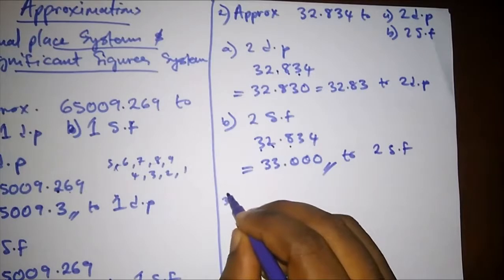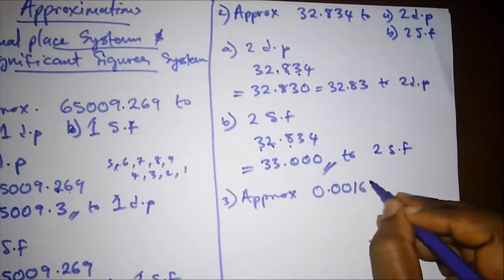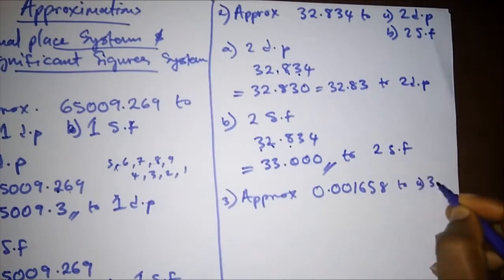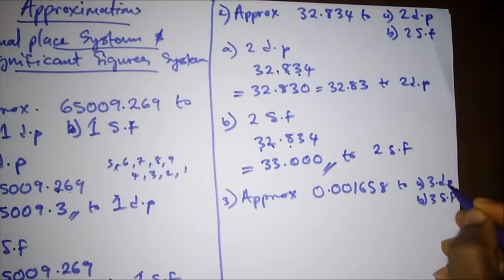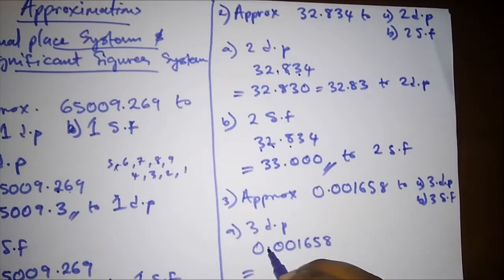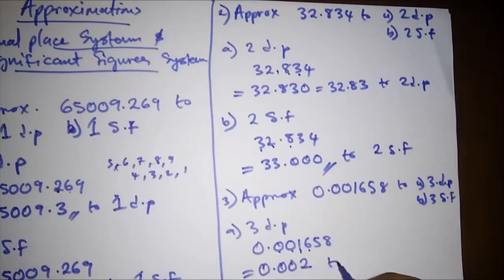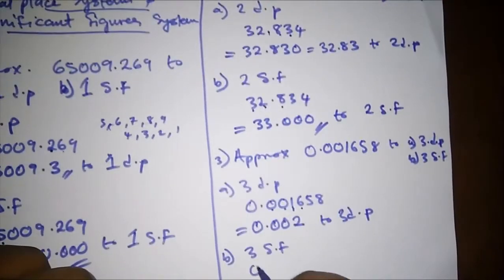Let's do another example to further understand. Approximate 0.001658 — part (a) to three decimal places (3 dp) and part (b) to three significant figures. For part (a), three decimal places: we count from the decimal point — one, two, three — giving us 0, 0, and 1. The next digit is 6; since 6 is 5 or above, we can round up. We add one to the 1, making it 2. Our answer to three decimal places is 0.002.